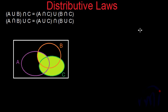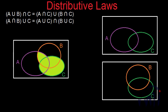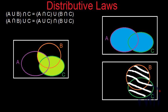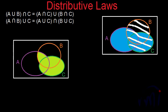Now let's understand the right hand side of the second law. I have drawn two more Venn diagrams. A union C is shown in the first Venn diagram — this portion. B union C is represented in the second Venn diagram using lines — that is B union C. To find their intersection, we overlap these two Venn diagrams, and the area where we find both blue shading and white lines represents their intersection. This is the intersection of A union C and B union C.